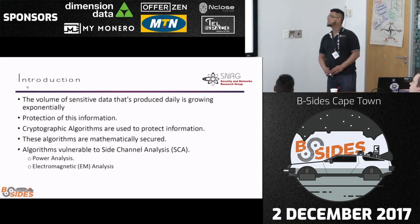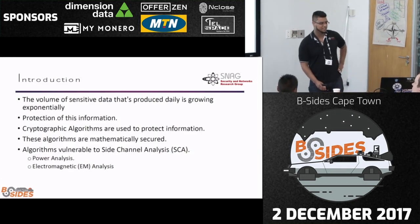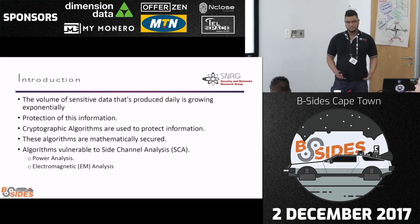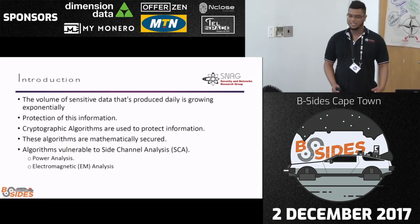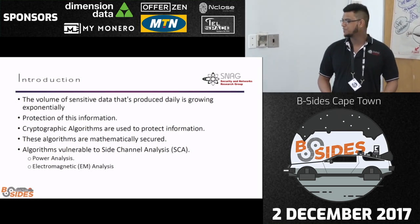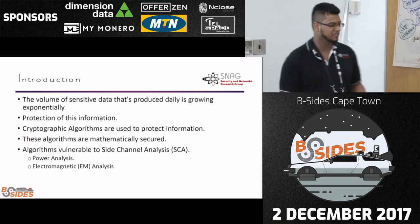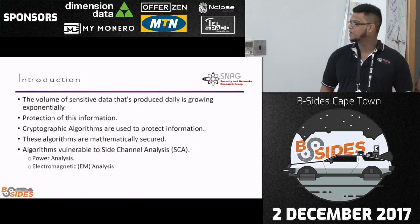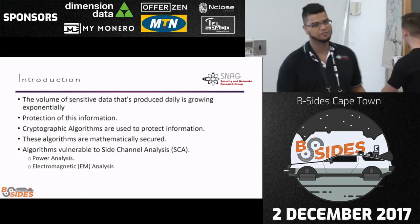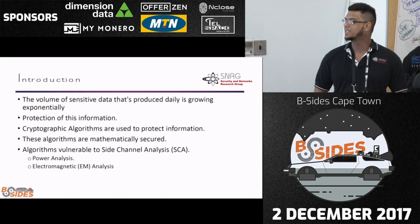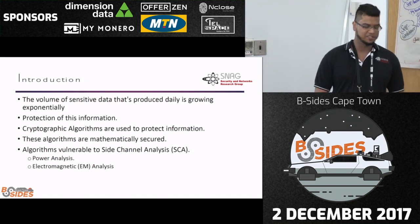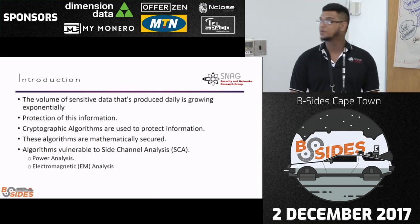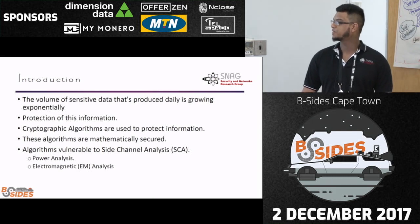The volume of sensitive data is just exponential. Our devices are continuously producing an exponential amount of data daily — our cell phones, our IoT devices, any device that can transmit is just producing data today. We are trying to protect this information, and one of these ways is cryptographic algorithms.